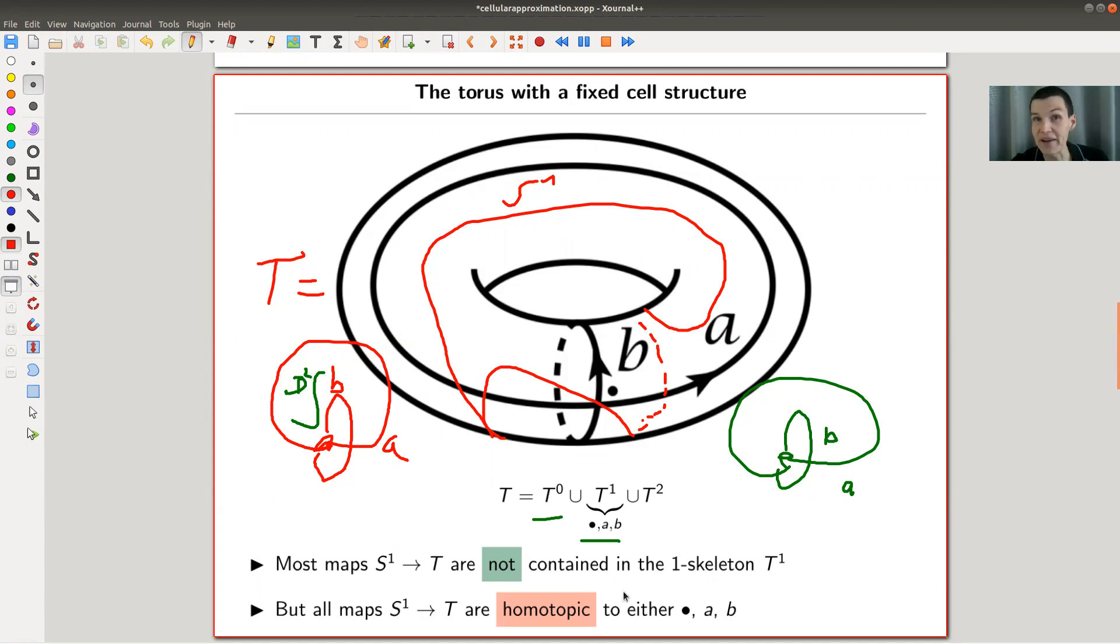It's slightly different—I'm not saying they miss the one skeleton, but they will certainly not be contained in the one skeleton, right? They're just far away from the one skeleton. But it turns out that all maps, of course, are homotopic to either a point—right, so that's what will happen, for example, if you would have an S^1 that sits like this—or to something in the one skeleton.